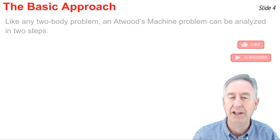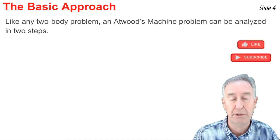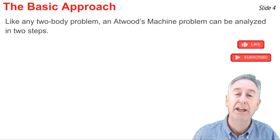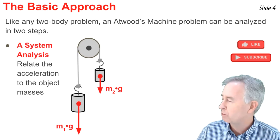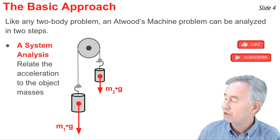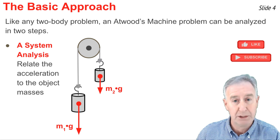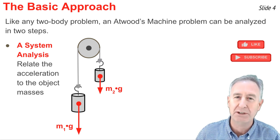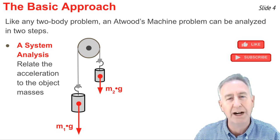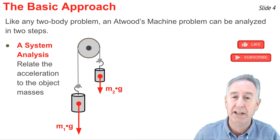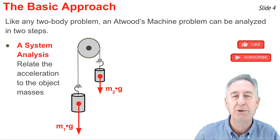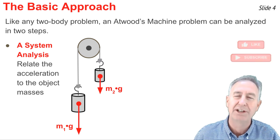We're going to employ the same method to analyze Atwood's machine problems, because like any two body problem, an Atwood's machine problem can be solved in two steps. The first step is what we call the system analysis. Instead of considering there being two objects, we think of them as one object. The mass of the system is simply the combined mass of the two objects. We draw a free body diagram, and then we use that free body diagram in Newton's second law to relate the masses of the objects to the acceleration.